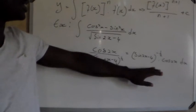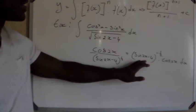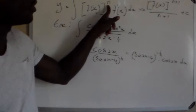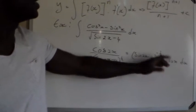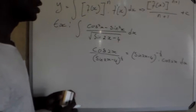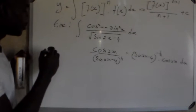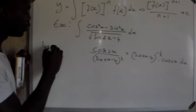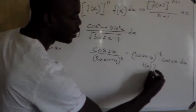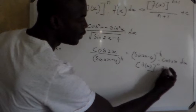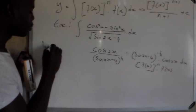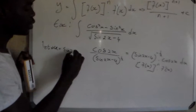Now this equation is in our required form. Our f of x is sine 2x minus 4. The power n is negative one-half, and it is multiplied by the derivative of f of x, which is cos 2x. So we apply the same method as before. We let u equal to the value of f of x, so u equals sine 2x minus 4.